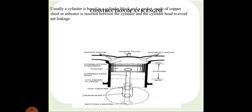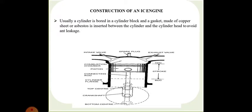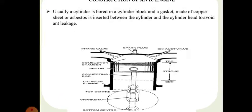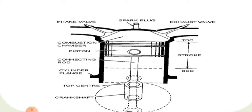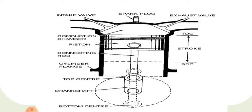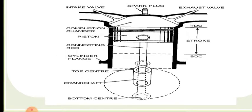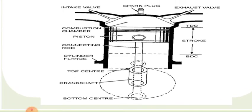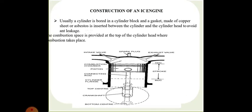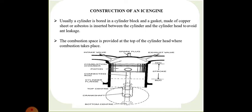Usually, the cylinder is bored in the cylinder block and a gasket made of copper sheet or asbestos is inserted between the cylinder — also termed the cylinder liner — and the cylinder head, to avoid leakage. There is an inlet valve, spark plug, and exhaust valve. One stroke is the movement of piston from BDC to TDC. The combustion space is provided at the top of the cylinder head where combustion takes place.